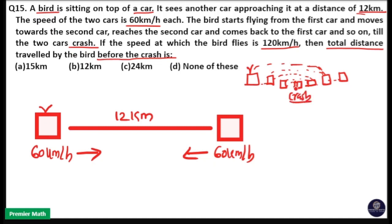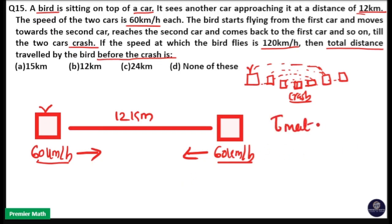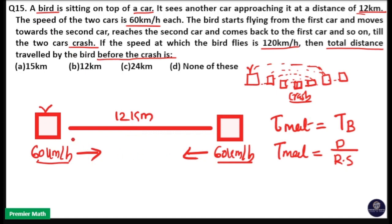The meeting point of the two cars is the key — the time the bird flies equals the time until the two cars crash. Since both cars are travelling at equal speed towards each other over 12 km, they will collide at the midpoint, that is at 6 km.